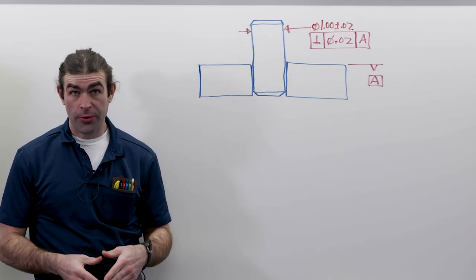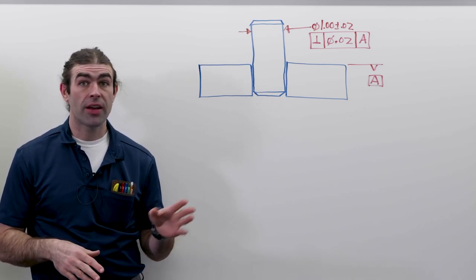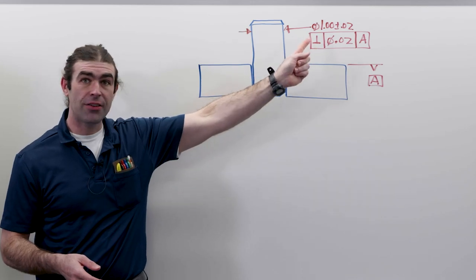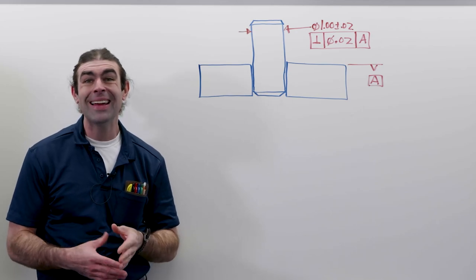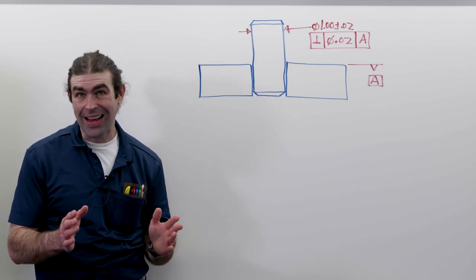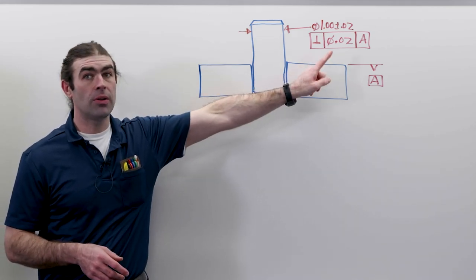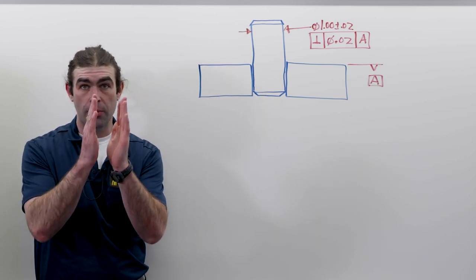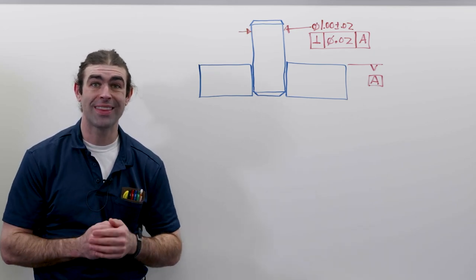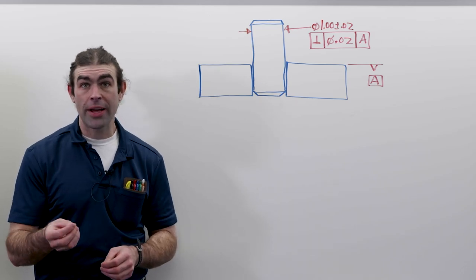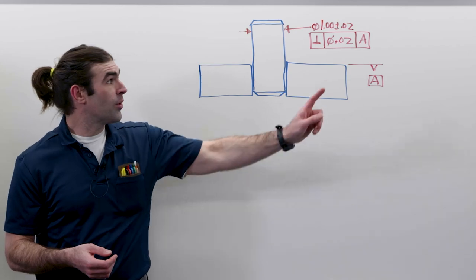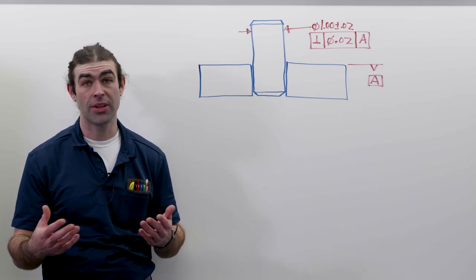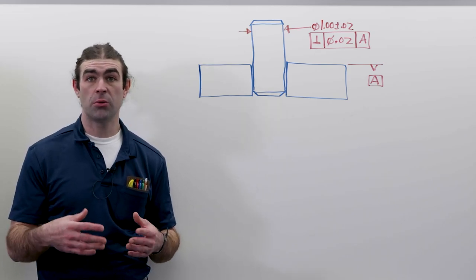Now let's talk about perpendicularity applied to a feature of size — in this case, a pin pressed into a plate. The feature control frame is attached to the dimension, and inside the feature control frame there's a diameter symbol indicating a cylindrical tolerance zone. The axis of the pin should fall within this tolerance zone in reference to datum A — a cylinder 20 thousandths in diameter shooting straight up from datum A. When applied to a feature of size, material conditions do apply. This is applied at RFS, meaning the 20 thousandths applies no matter what size the actual feature comes in at.